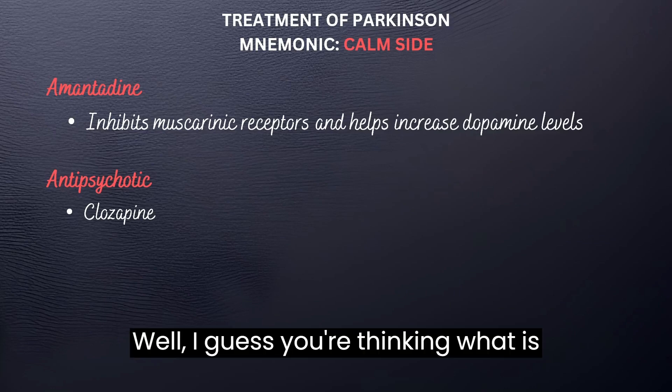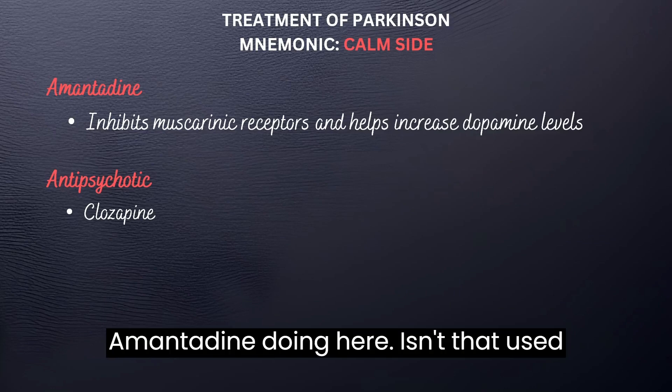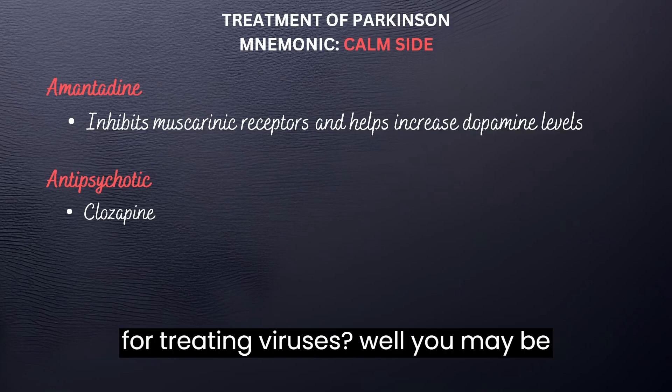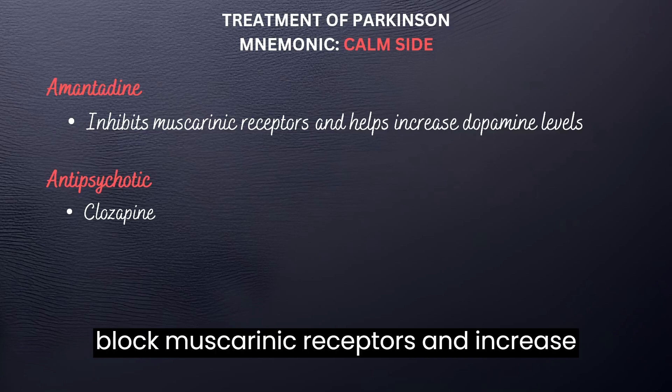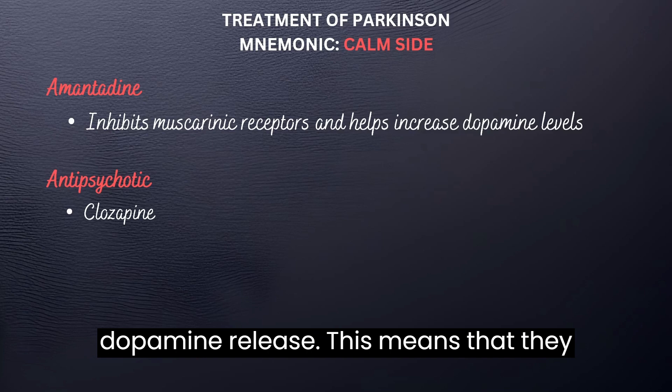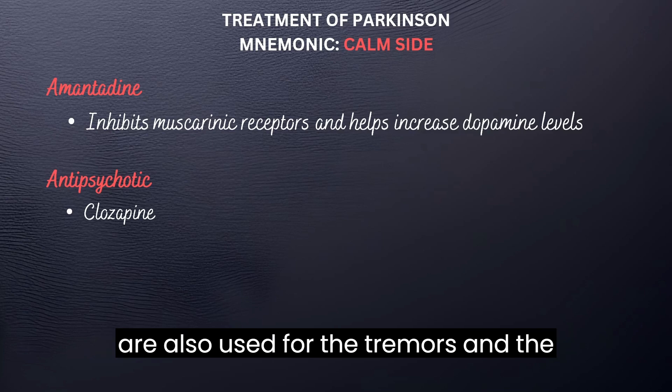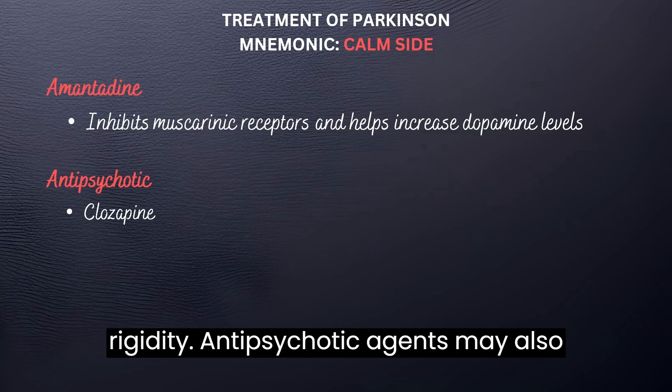You may be thinking: what is amantadine doing here — isn't that used for treating viruses? You may be right, but amantadine is also able to block muscarinic receptors and increase dopamine release. This means it is also used for tremors and rigidity in Parkinson's disease.